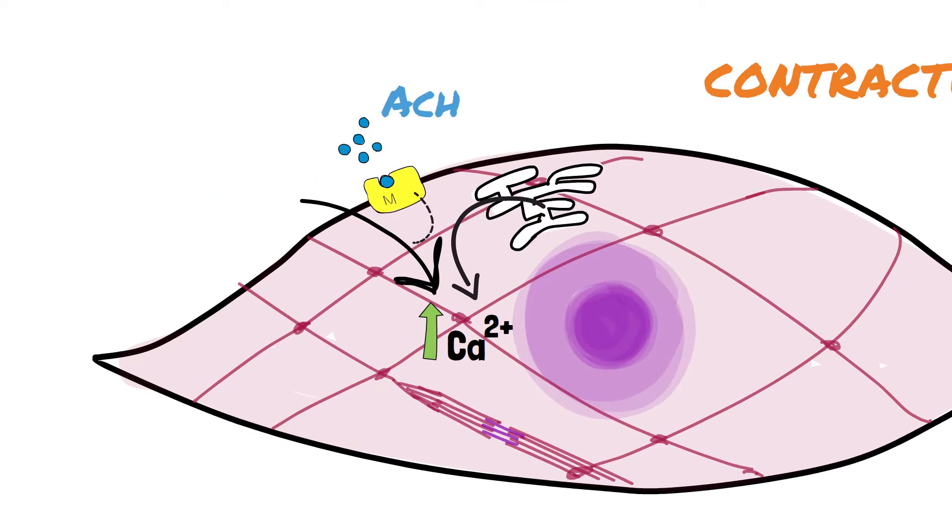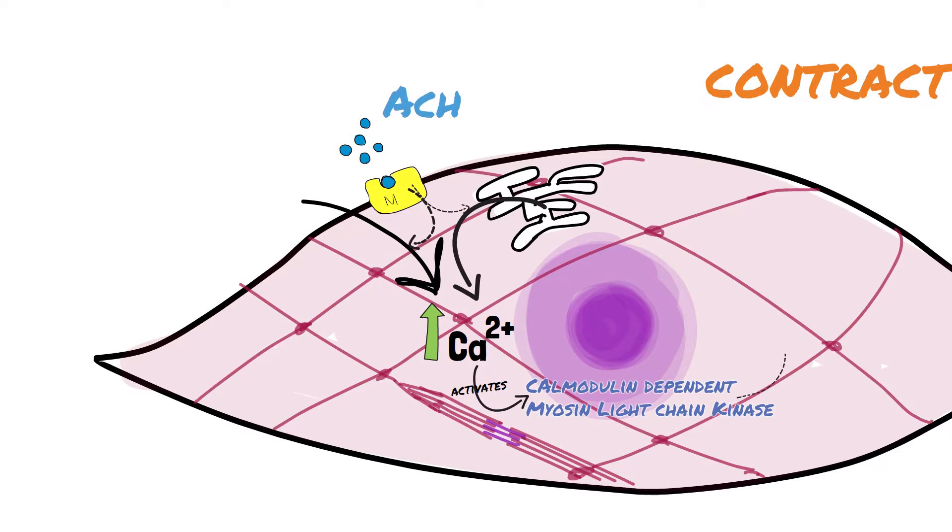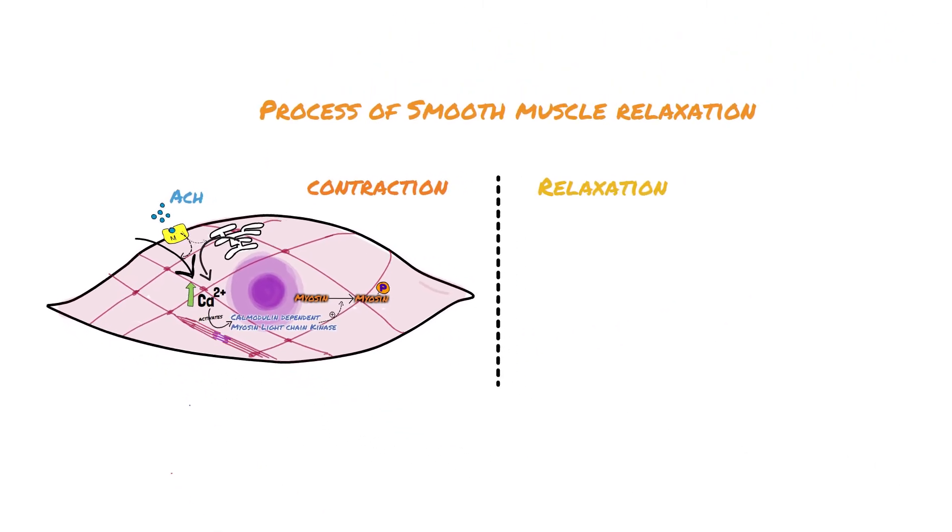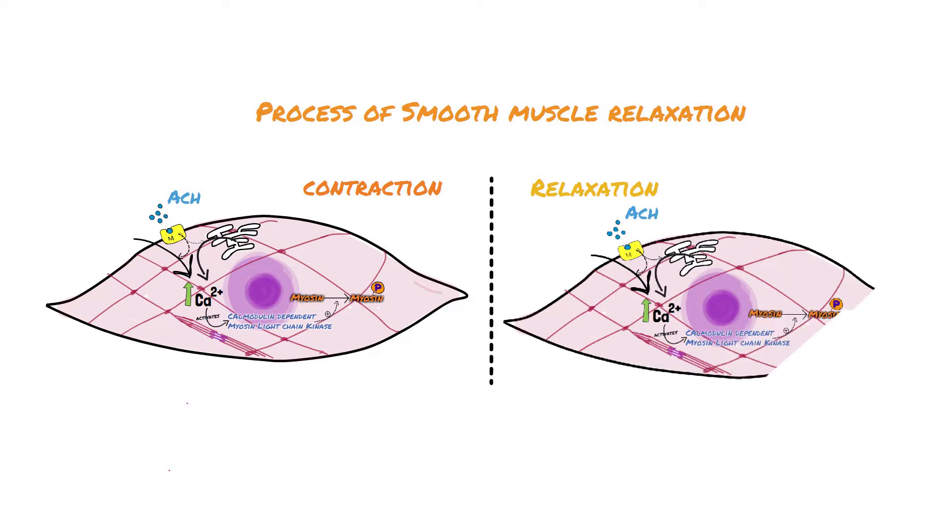Acetylcholine binding to muscarinic receptors leads to increased calcium influx. This activates calmodulin-dependent myosin light chain kinase. Then phosphorylation of myosin occurs, leading to increased myosin ATPase activity. Binding of myosin to actin causes contraction.